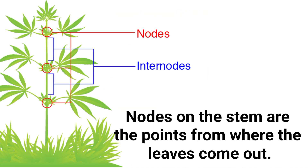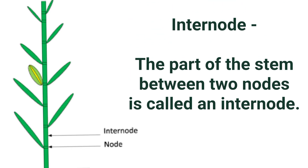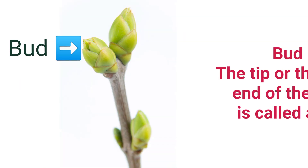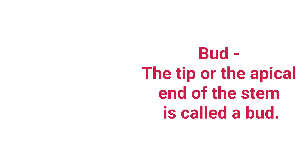There are nodes on the stem. Leaves come out at the nodes. The part of the stem between two nodes is called an internode. The tip or apical end of the stem is called a bud.